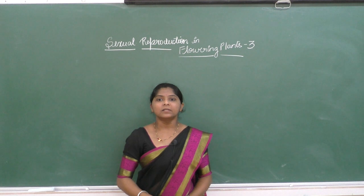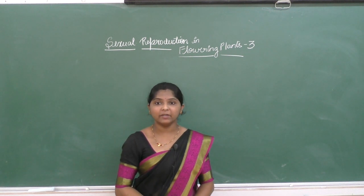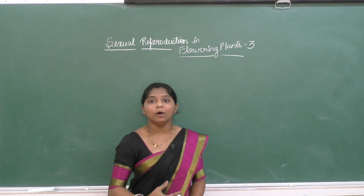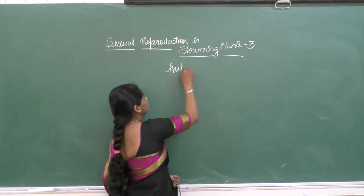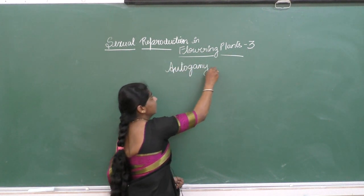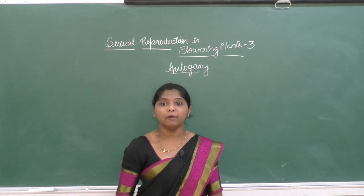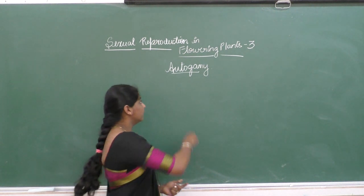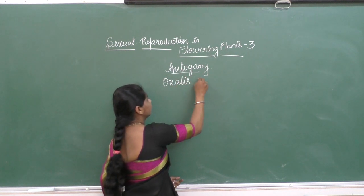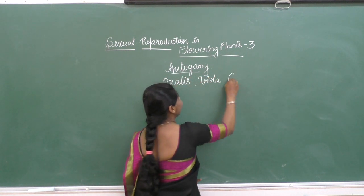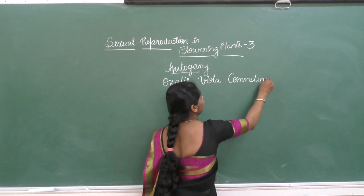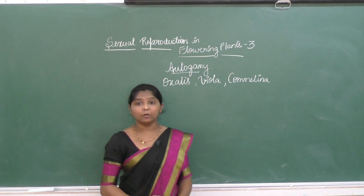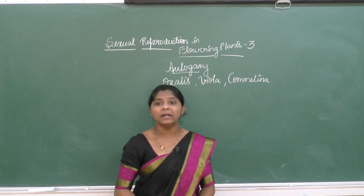Hello, dear students. In Sexual Reproduction of Flowering Plants, Session 3, we discussed autogamy, which is self-pollination. Some plants like Oxalis, Viola, and Comelina produce two types of flowers.